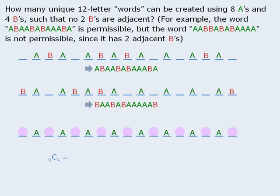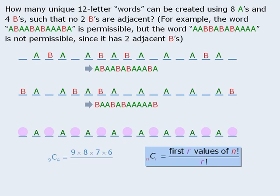Now to evaluate this, we can use the shortcut discussed in the video titled Calculating Combinations. The shortcut tells us that nine choose four is equal to the first four terms of nine factorial, divided by four factorial.